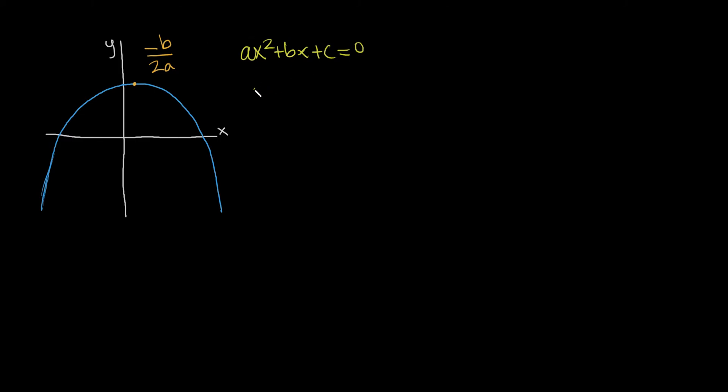if we take it, we're going to have 2ax plus b equals 0, and if we solve for x here, the x is going to be—and I meant to say the x-position of this up here,